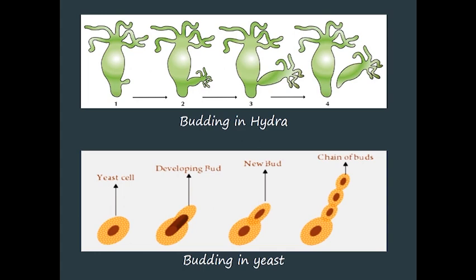In cases of yeast, sometimes the new bud that was formed has not completely fallen off — it chooses to stick to the parent and the next bud also sticks, and eventually what you get is a chain of buds. Biology is a science of exceptions, so the bud may or may not fall off from the parent body. That brings us to the end of the second mode of asexual reproduction.